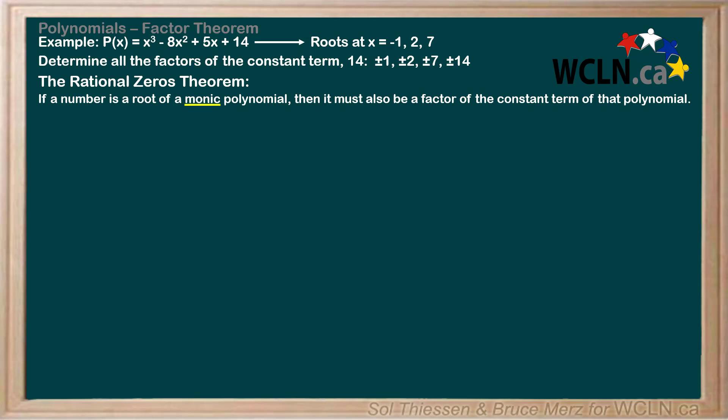Monic just meaning that the leading coefficient of the polynomial is 1. You'll see how we can apply the theorem to polynomials with leading coefficients other than 1 in a future video. Let's apply this to a different example. Factor p of x, which is x to the power 4 plus 6x cubed minus 28x squared minus 102x plus 315.